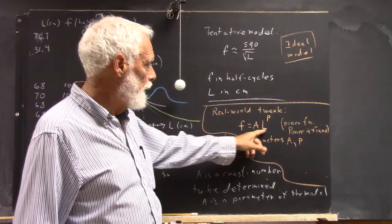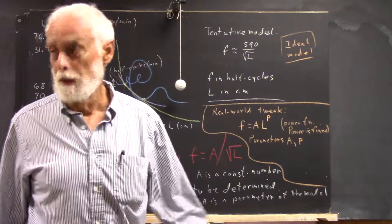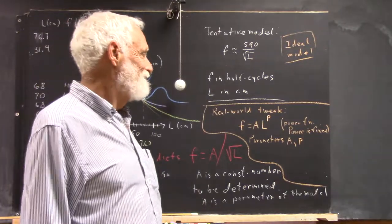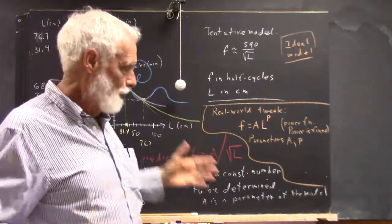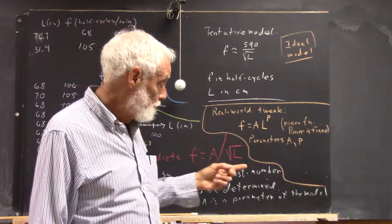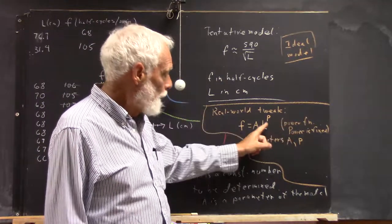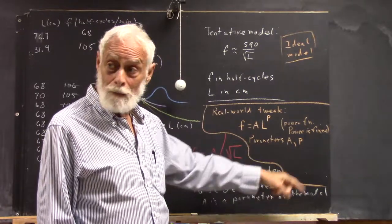This would be F equals AL to the P, and we ask what kind of function is this? Everybody wants to say it's an exponential function. It's a power function. You've got to know the difference. Very important. So it's a power function. The power is fixed. P is a parameter of the system.